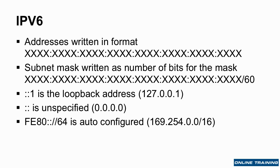The address is written in a format with 16 bits in each section, and each of those four digits is a hexadecimal. The subnet mask is also written as a number of bits for the mask — so instead of having 255.255, you just add a slash at the end, and that tells you the bits for the subnet mask. Something slash 60 tells you the first 60 bits are used for the subnet mask.